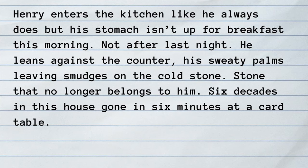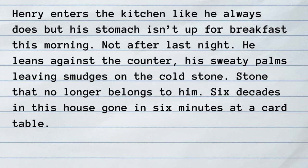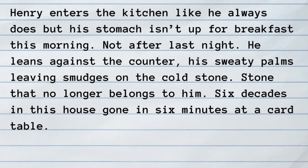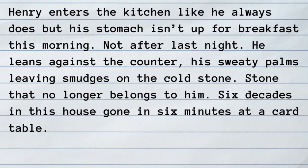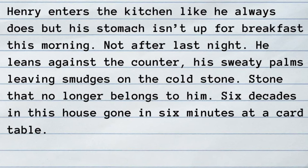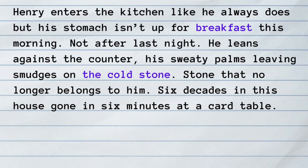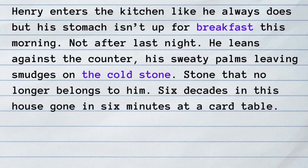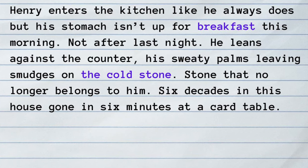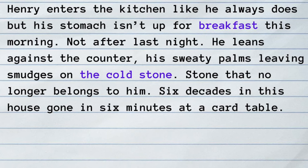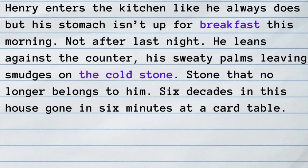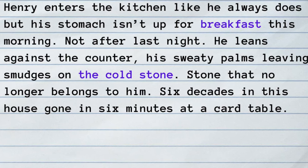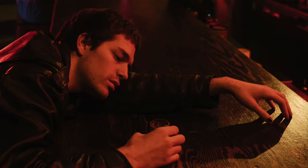Now let's write the sentence through the lens of the character, focusing exclusively on his viewpoint — what he notices and interacts with in the room, leaving out any extraneous details he wouldn't pay attention to. Henry enters the kitchen like he always does, but his stomach isn't up for breakfast this morning. Not after last night. He leans against the counter, his sweaty palms leaving smudges on the cold stone. Stone that no longer belongs to him. Six decades in this house, gone in six minutes at a card table. This description ignores aspects of the room the character wouldn't notice. He's too preoccupied to identify a bowl of fruit, and carelessly calls it breakfast. He also highlights the feel of the counter, since it's a sharp contrast to his skin and a further sign of something he's lost control of.